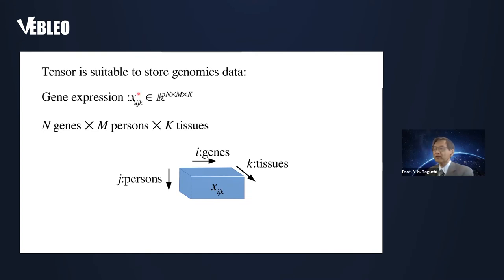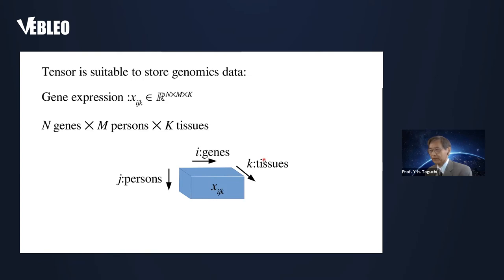A tensor is a suitable format to store complicated genomic datasets. For example, we have gene expression of n genes, from n persons, across k tissues. This dataset can be stored as a tensor: one dimension corresponds to persons j, another corresponds to genes i, and the third corresponds to tissues k. Clearly, a tensor is a suitable way to store genomic data with more than two features.